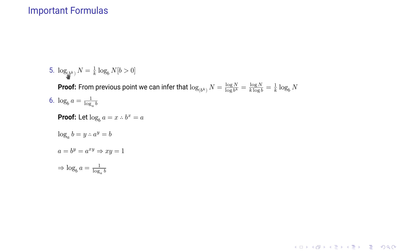The fifth important formula: log of n with base b^k equals (1/k) times log of n with base b, where b is greater than 0. Using the change-of-base formula, log of n with base b^k equals log n divided by log(b^k), which equals log n divided by k·log b, which equals (1/k)·log of n with base b.